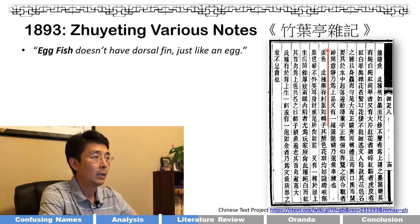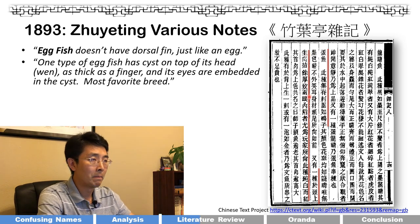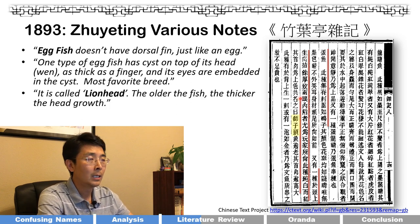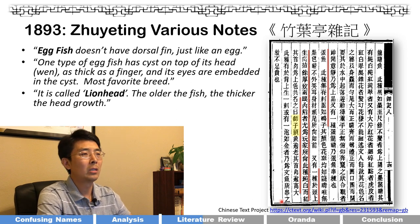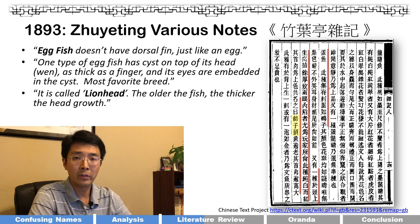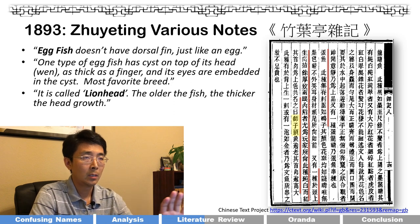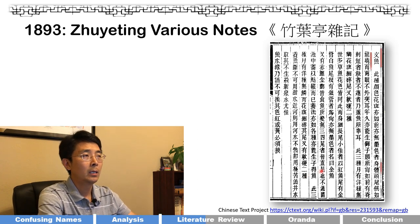I'll show the pages from the book and translate key lines. For egg fish: 'Does not have a dorsal fin, just like an egg. One type of egg fish has a cyst on top of its head, as thick as your finger, with eyes embedded in the cyst. This is the most favored breed — it is called lionhead.' And then: 'The older the fish, the thicker the head grows.' This not only gives the name but also defines the head growth attribute.